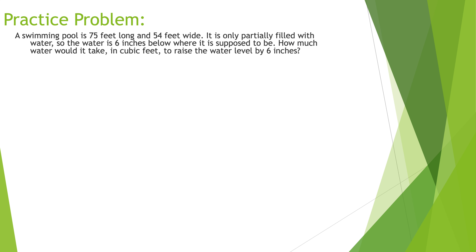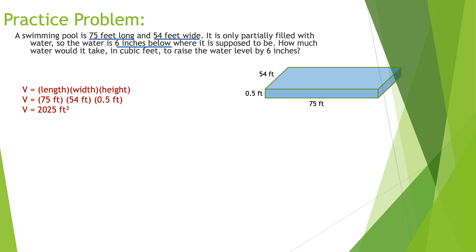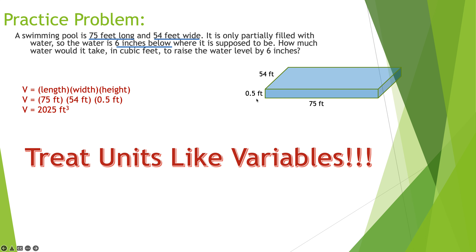Stop and work the next problem. Underlining the important stuff: 75 feet long, 54 feet wide, 6 inches deep — danger! Feet, feet, inches. I have to convert those inches to the same unit, so I convert 6 inches to half a foot. Volume = length × width × height = 75 × 54 × 0.5 feet = 2,025 cubic feet. The question asks how much water it would take in cubic feet — the key step was converting 6 inches to half a foot.